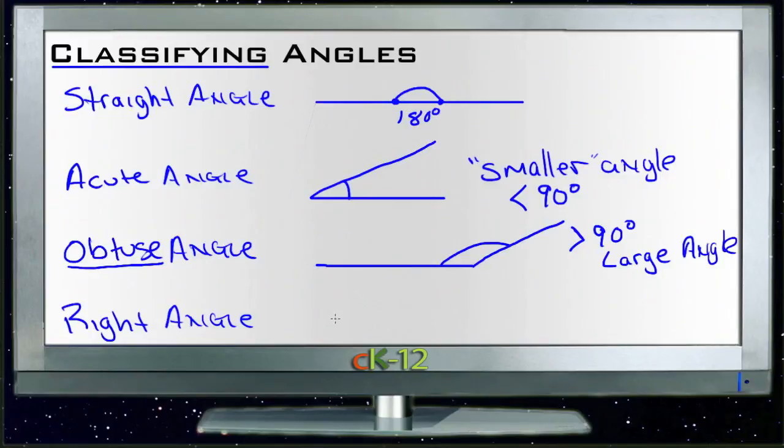And then finally, a right angle is one you're surely very familiar with. You may or may not have called it a right angle before, but a right angle is one that is exactly 90 degrees, and it's usually marked with this little box on the inside of the angle here.